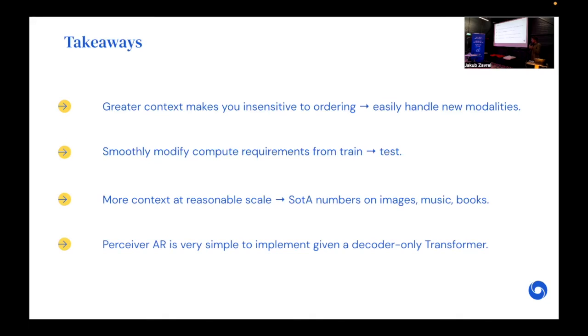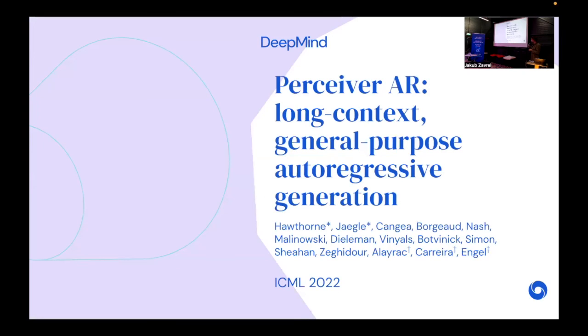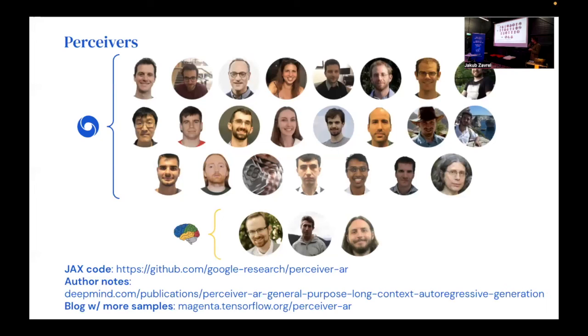This work was published at ICML, and it was done in collaboration with a large group of people at Google Brain and at DeepMind. These are the folks who've contributed to the Perceiver line of work in general and to Perceiver AR in particular. I encourage you to check out our Jax code, the author notes here, and check out the blog on the Magenta website for more samples from the music model. Thanks for your time.